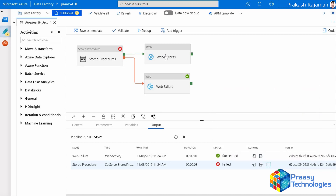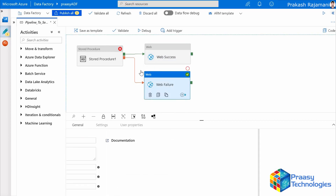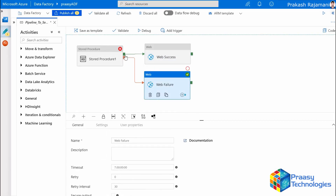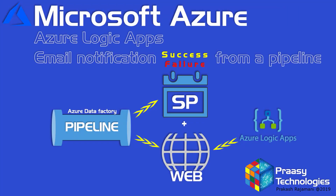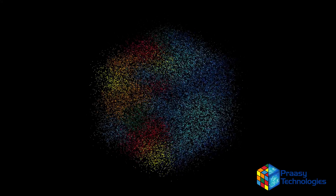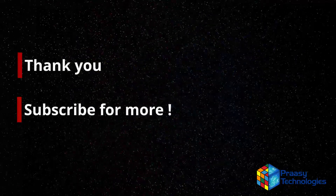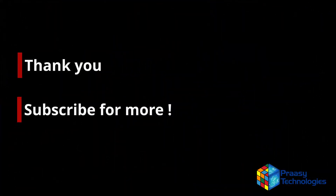In this way we can send success or failure email notifications using a web activity connected to Logic Apps. Please refer to the video description for all scripts. We have come to the end of this session — we can easily send email notifications using Logic Apps and the web activity. For all scripts and other tutorial links, please check the video description below. Thank you, please support me by subscribing to my channel for more videos. Have a great day.